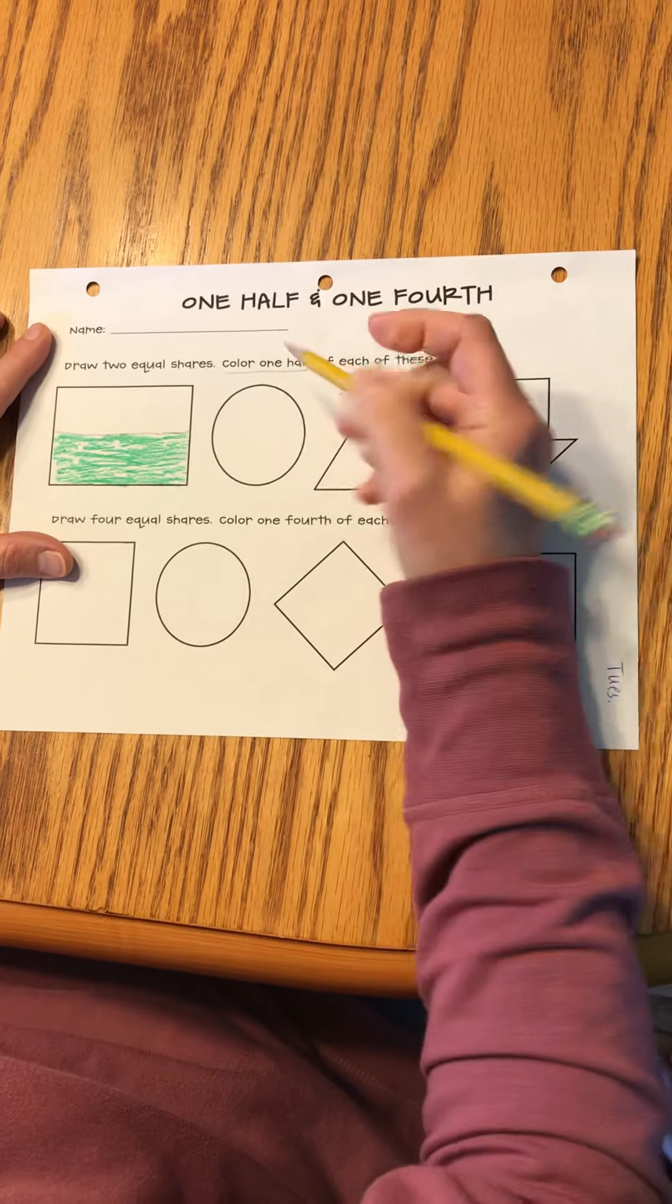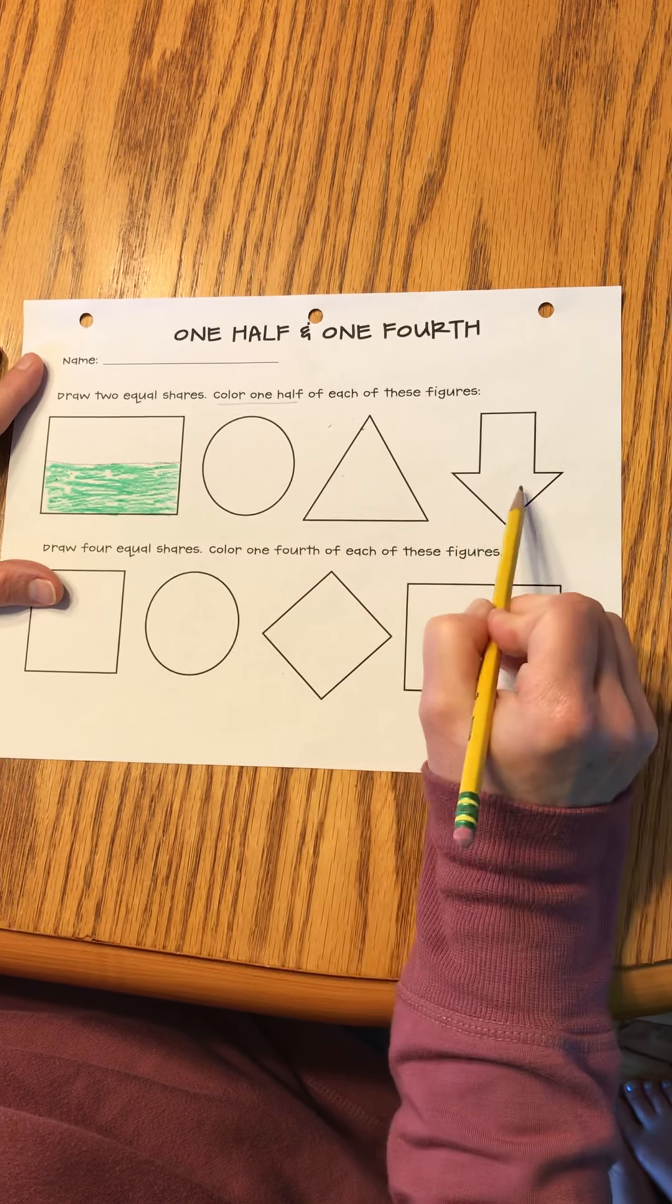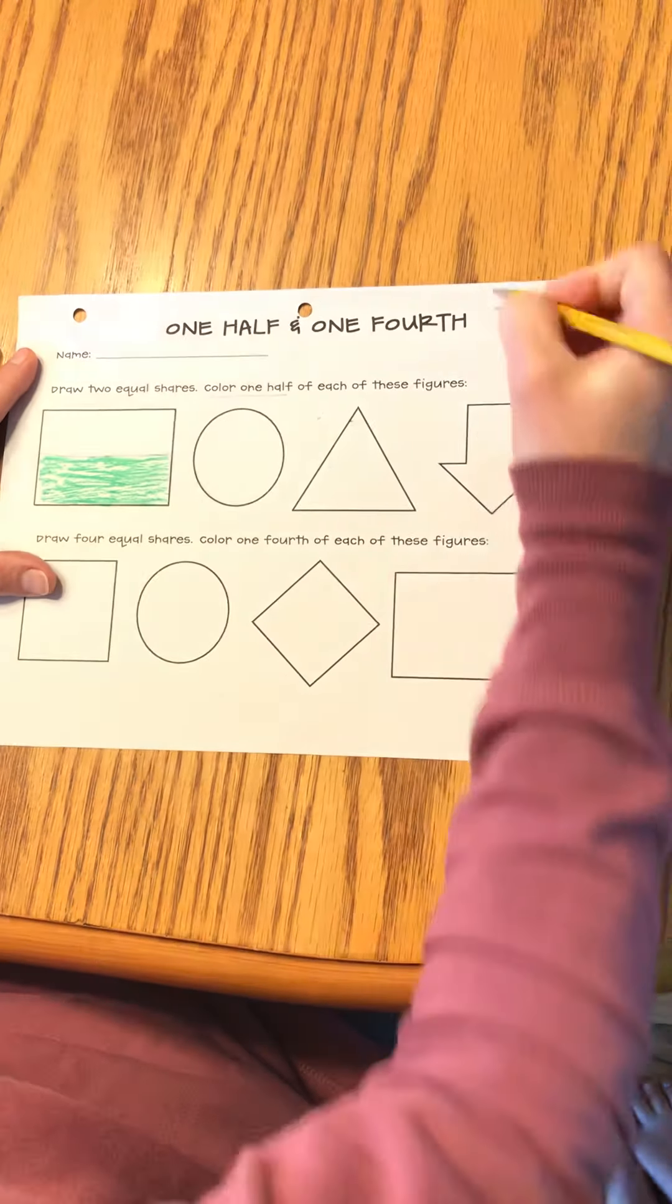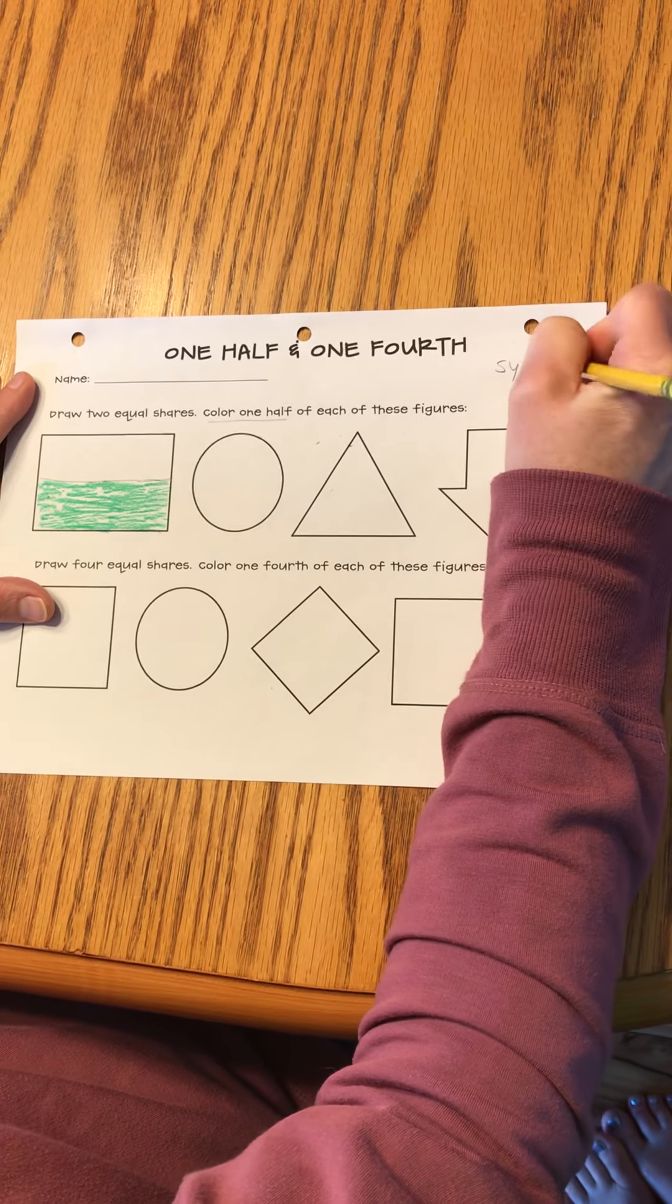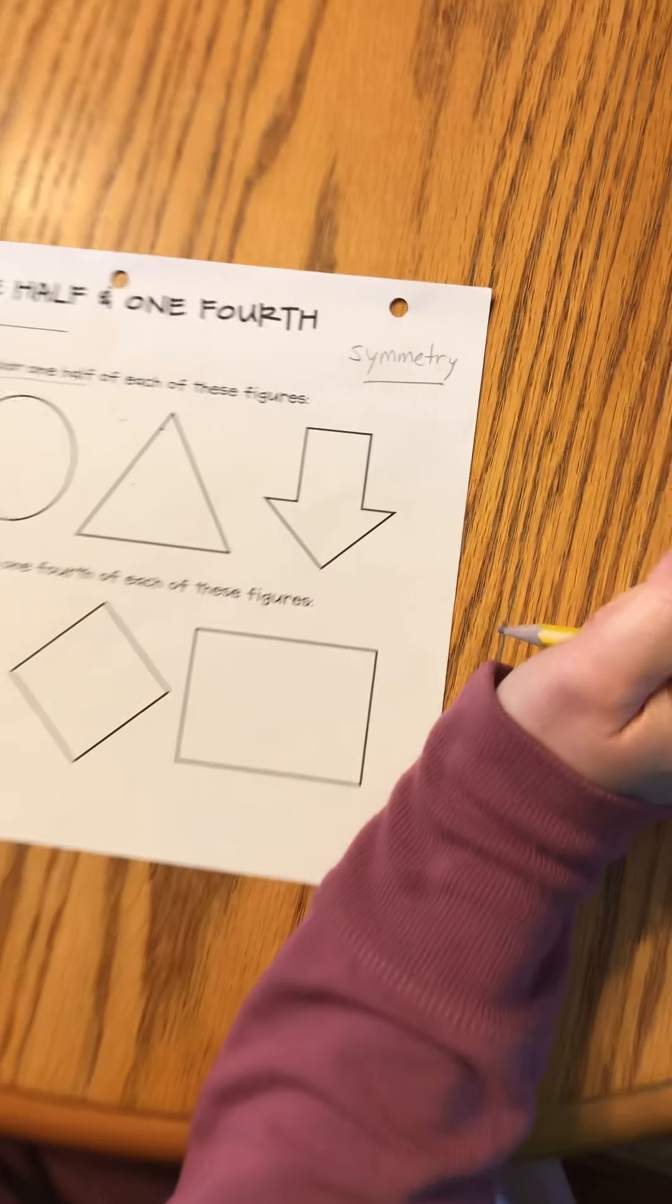Then I go to my next shape and you'll cut it in half. Same with the circle, triangle, and the arrow. When you do the arrow, make sure you have symmetry. That means both sides need to look the same.